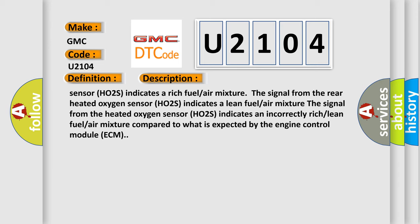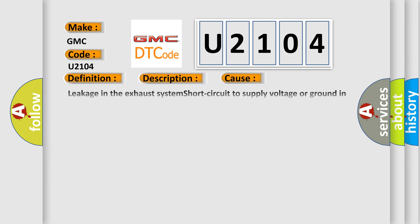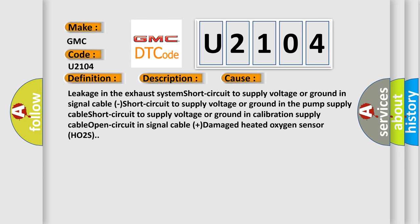This diagnostic error occurs most often in these cases: Leakage in the exhaust system, short circuit to supply voltage or ground in signal cable, short circuit to supply voltage or ground in the pump supply cable, short circuit to supply voltage or ground in calibration supply cable.